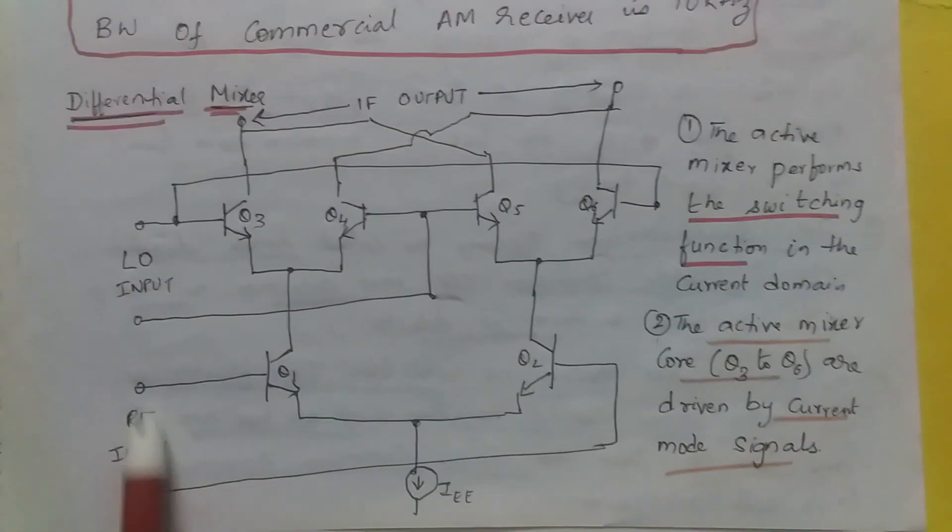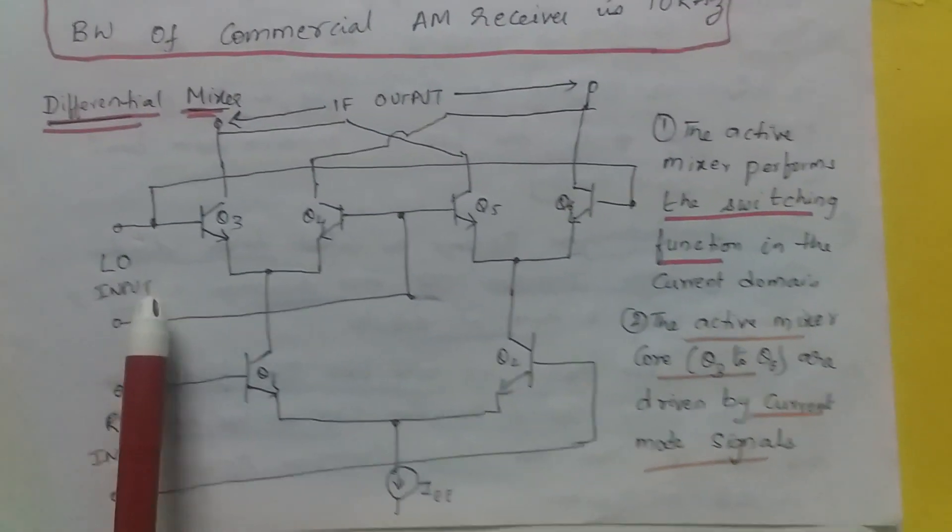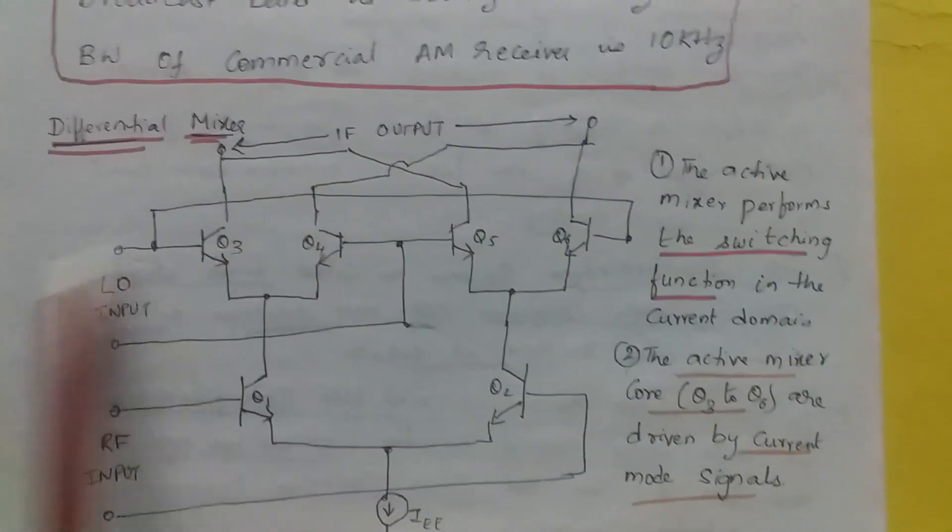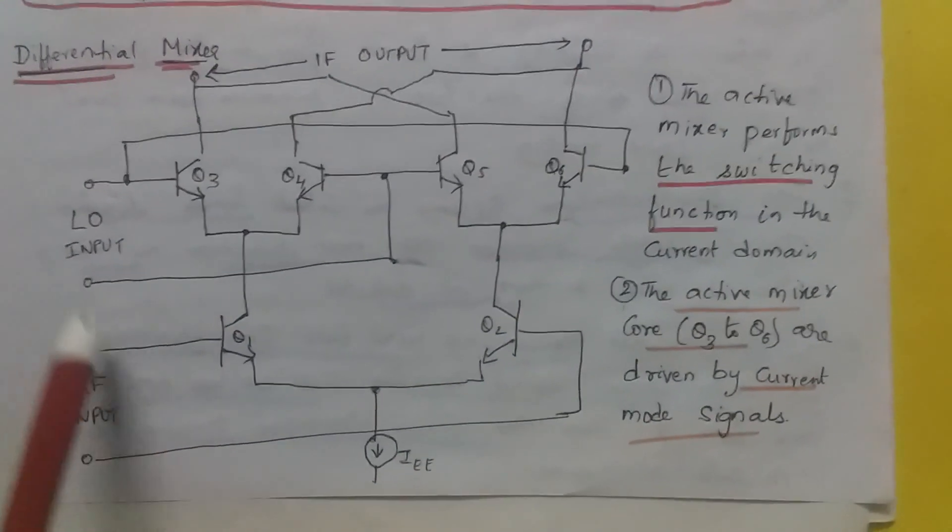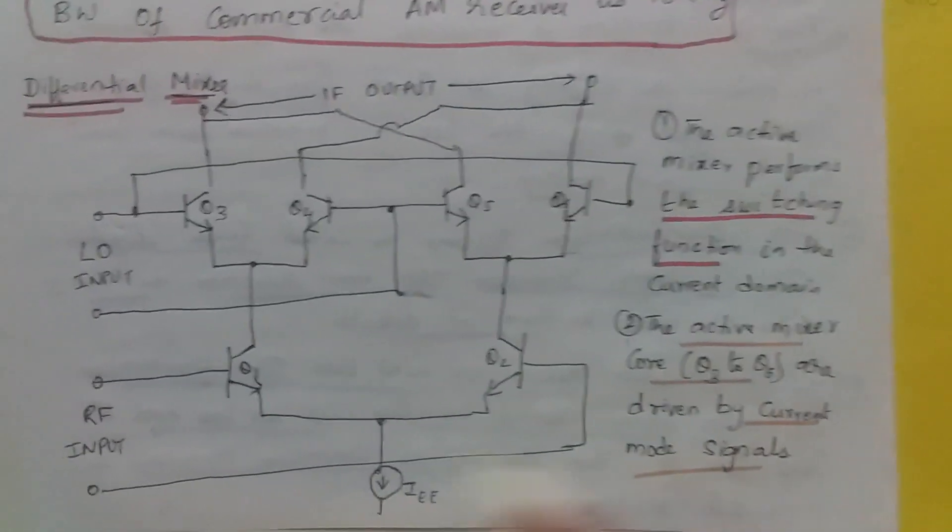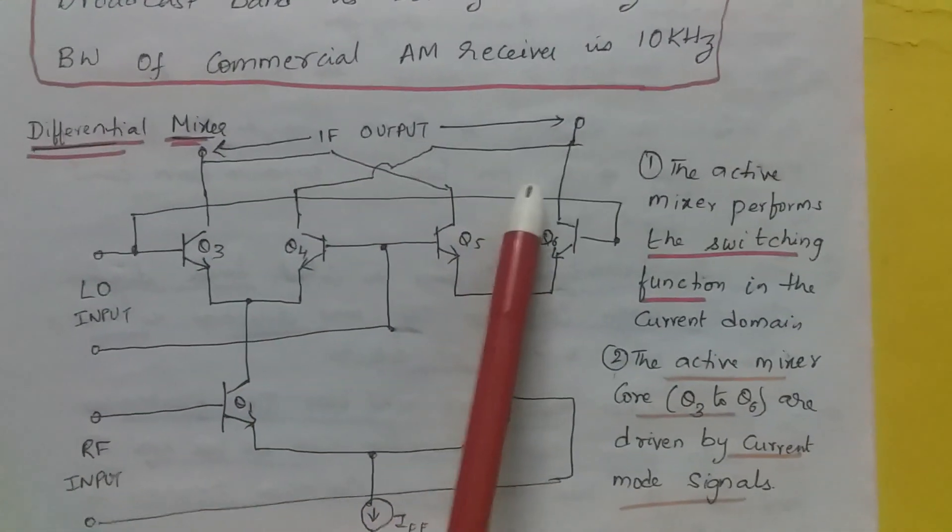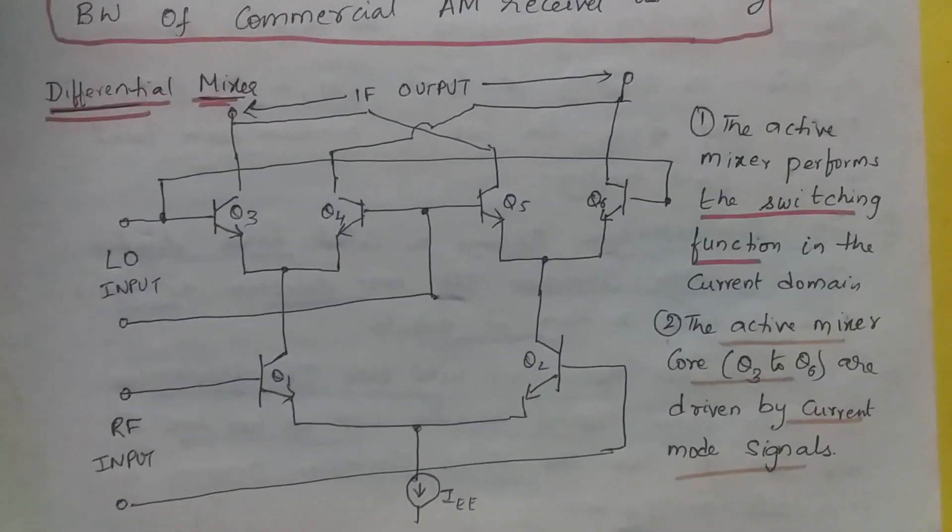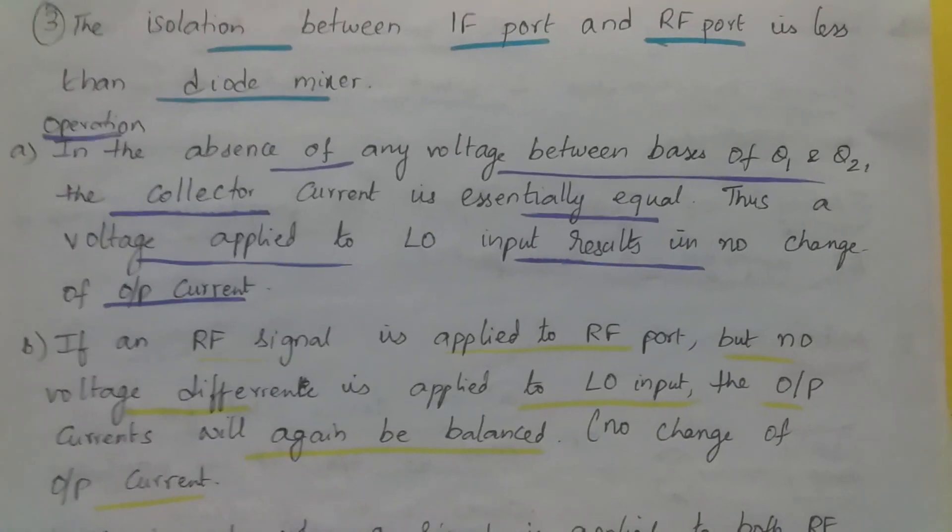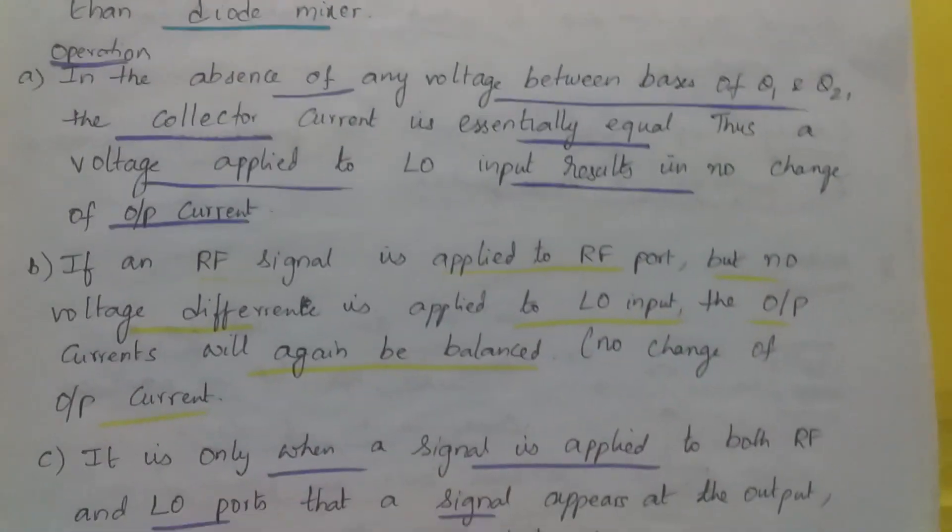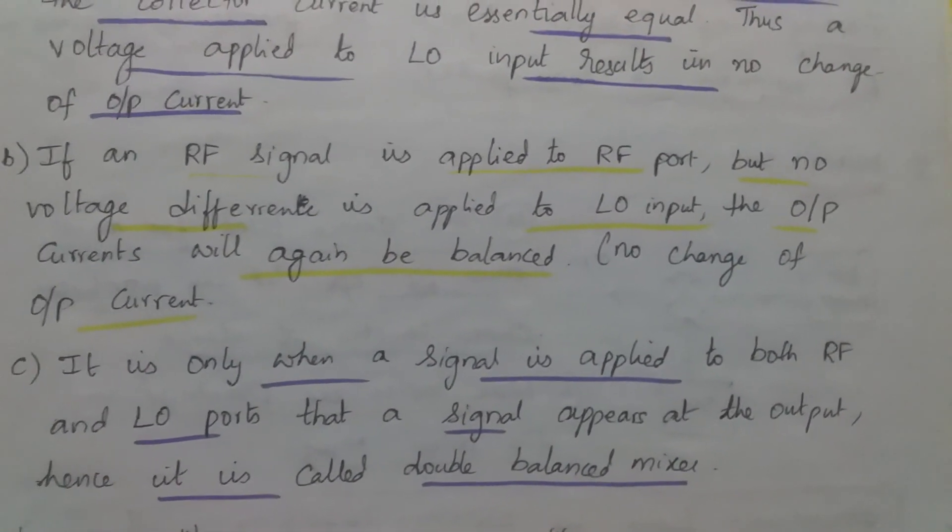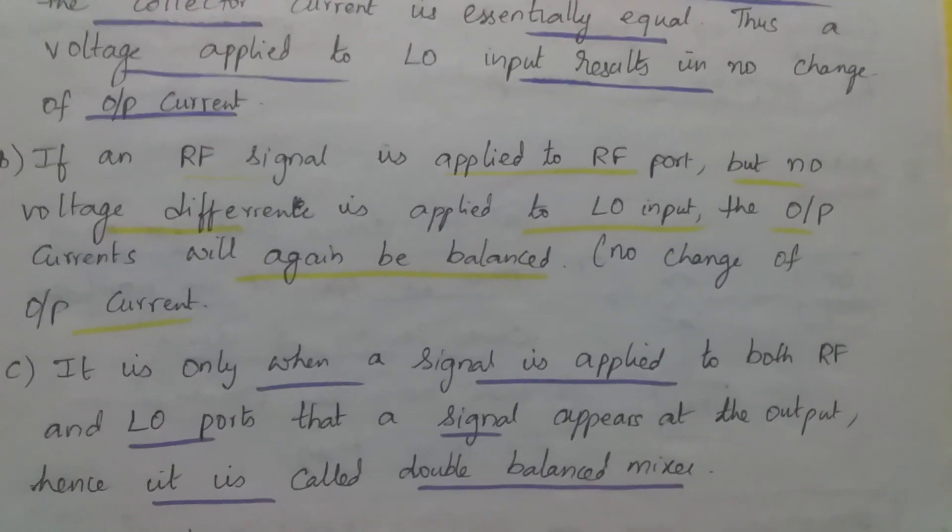If RF input was available and LO signal is not available, then this and this will be same and the signal cancels out and IF output is zero. Only when RF input and LO input are available, we get the difference of both signals and we get IF output. It is only when a signal is applied to both RF and LO ports that a signal appears at the output. Hence, this is called double balanced mixer.